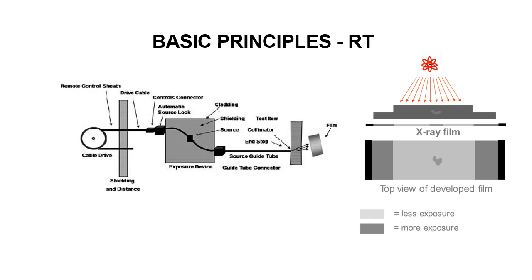When a weld needs to be inspected, a long tube is connected to the device that allows the source to travel to the location that needs to be inspected. A long drive cable is also attached to the other end of the device. This allows the radiographer to stand far away from the radiation source during the inspection. Typically, the source is in the guide tube only a few seconds to a few minutes, depending on what is being inspected. Radiography is used to inspect welds on pipes for oil rigs, large tanks that hold gasoline, airplane engines, and other large metal structures.